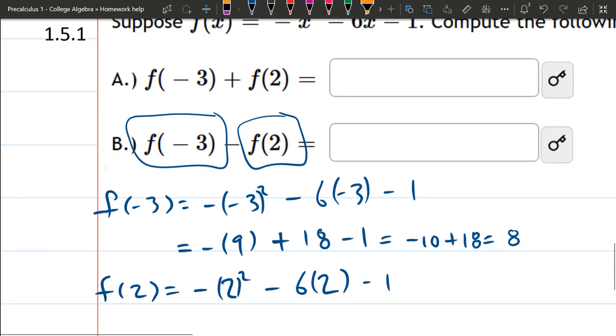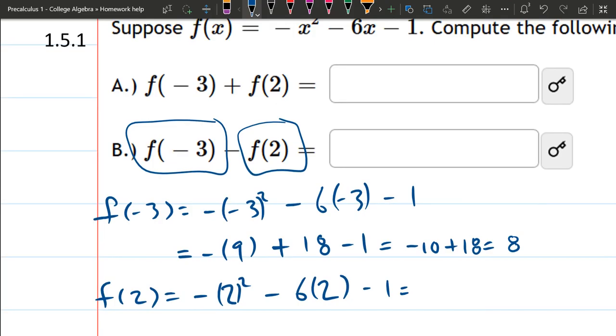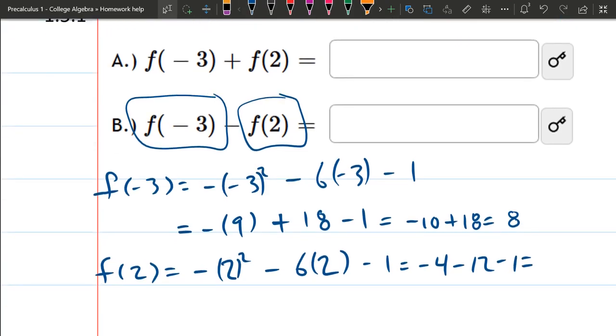All right, two squared is four. Bring the negative over. Six times two is 12. Bring that negative. Negative 12 minus one. So right here, we have negative four minus 12 is negative 16 minus one. Negative 17.